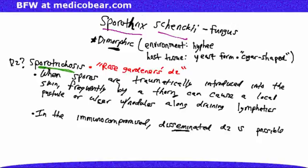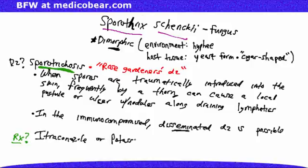Sporotrichosis can be treated with itraconazole or potassium iodide.